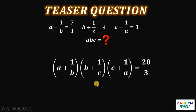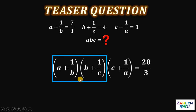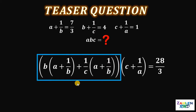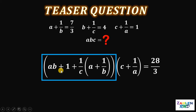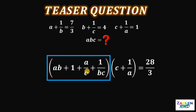Now let's multiply the first two terms on the left-hand side using chunk multiplication. We need to distribute A plus 1 over B to B plus 1 over C. This becomes: distribute B to (A + 1/B) giving AB plus 1, then distribute 1 over C to (A + 1/B) giving A over C plus 1 over BC.